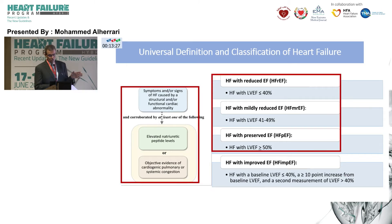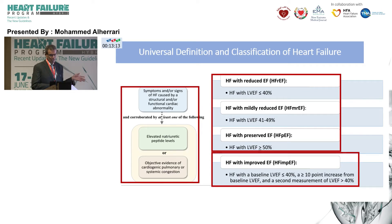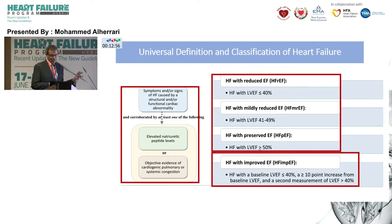The classification based on ejection fraction is, as we all know, HFrEF, HFmrEF, HFpEF, and HFimpEF — where HFmrEF is mildly reduced, not mid-range. The new class is heart failure with improved ejection fraction. This is important — we see many HFrEF patients who are treated and improve, with ejection fraction becoming more than 40%. While they made this a class on its own, they emphasize the importance of continuing guideline-directed therapy.